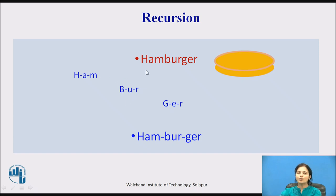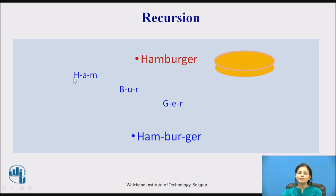When I want to pronounce the term 'hamburger,' it is a bigger one. I will try by breaking it: H-A-M, then B-U-R, then G-E-R, and then I can get 'ham-bur-ger.' What I have done is I have cut down this word into parts — first into 3 parts. Then recursively: H-A-M becomes 'ham,' B-U-R becomes 'bur,' G-E-R becomes 'ger.' Then we recollect it as 'ham-bur-ger.'